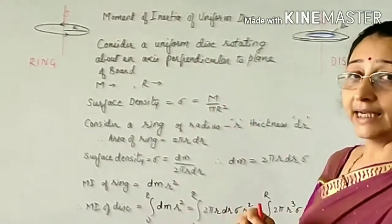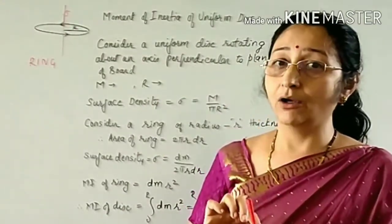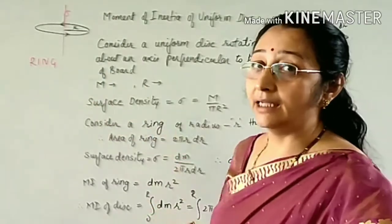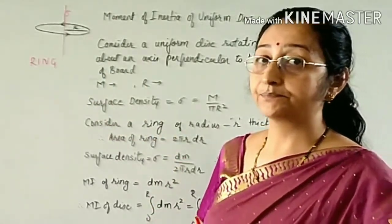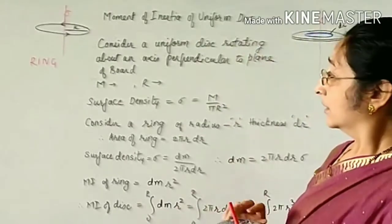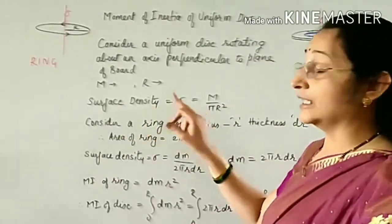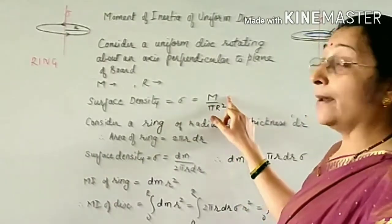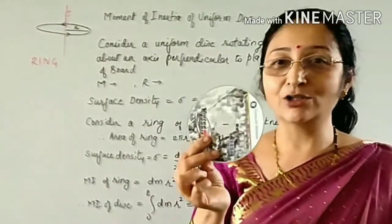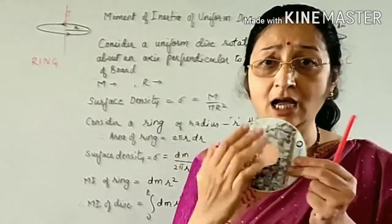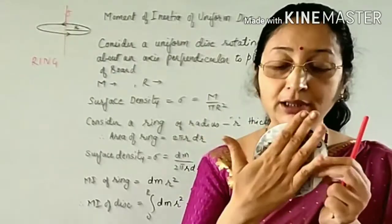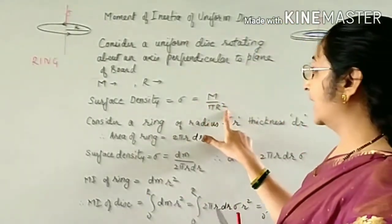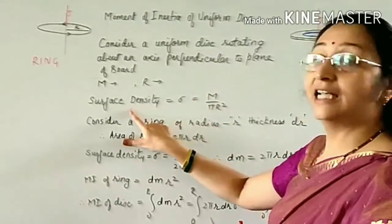The surface density sigma is equal to M divided by π·R², that is, the mass of the disc upon the area of the disc. So σ = M / (π·R²) is the surface density.